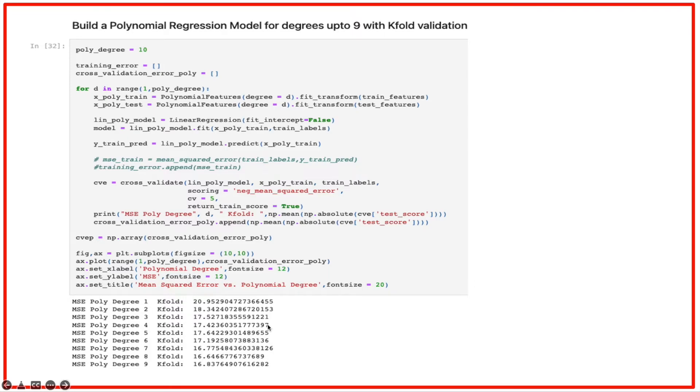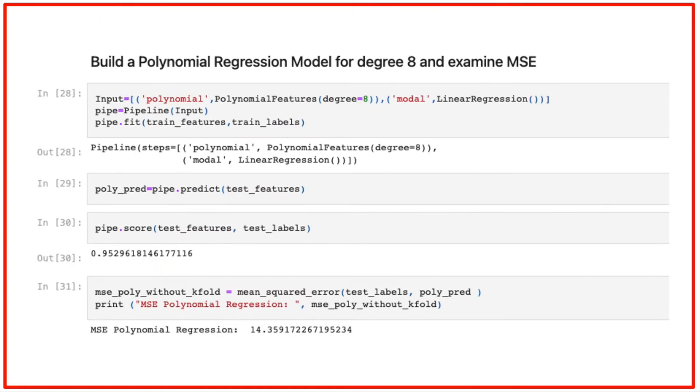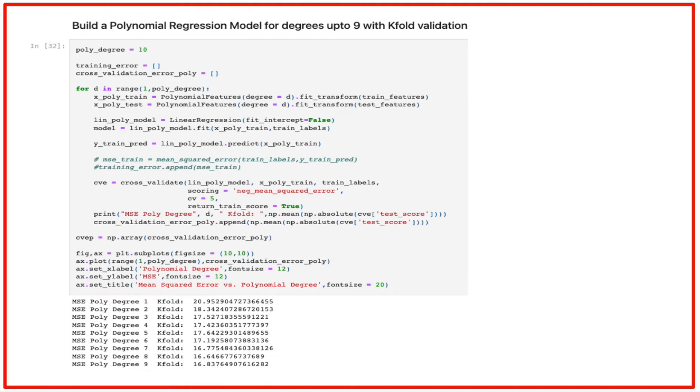One thing you might observe is that the MSE for polynomial regression without k-fold is yielding a much lower MSE value compared to using k-fold. We can play around with hyperparameters of how large our test and train set has to be or how large our k-fold set has to be.